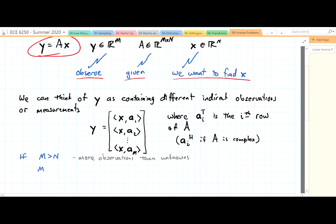If we have m equals n, then the number of observations is equal to the number of unknowns.